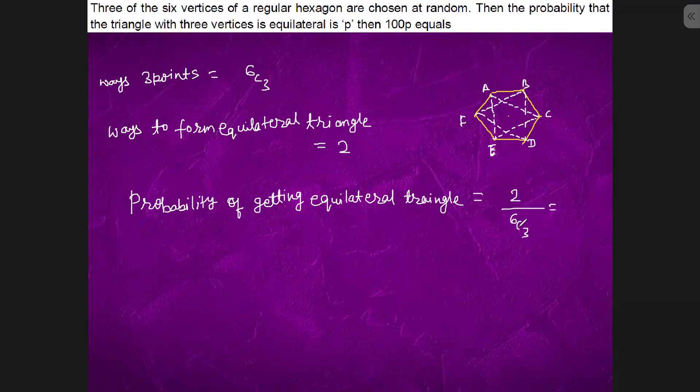If we calculate 6C3, it will come out to be 20. So this is P. We are told to find 100 into P. So P is 1 by 10 and we have to multiply 100. So the answer is 10.